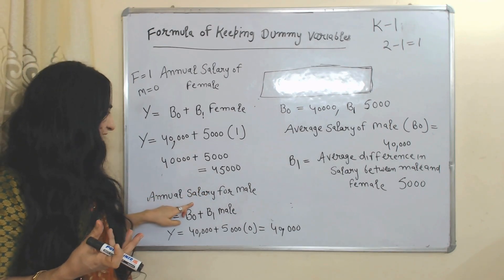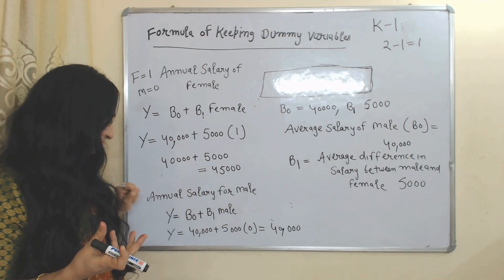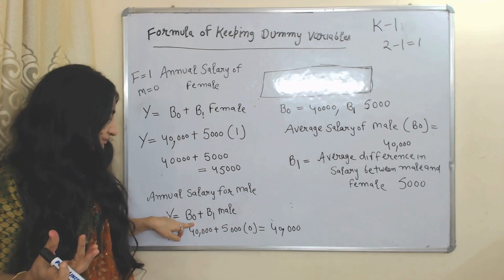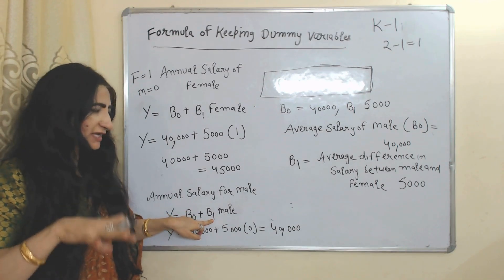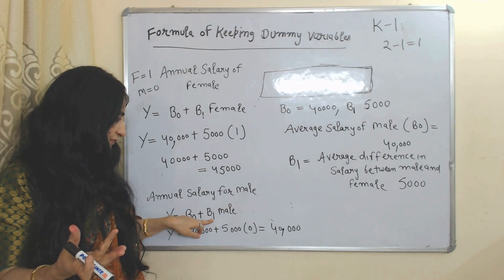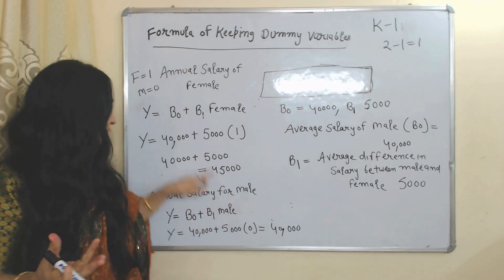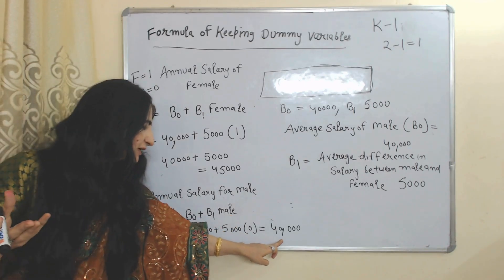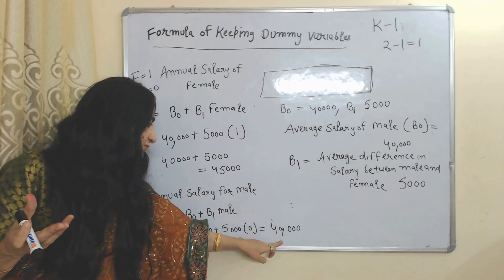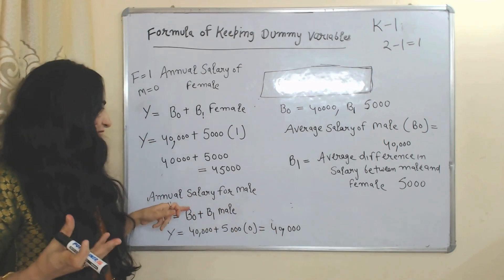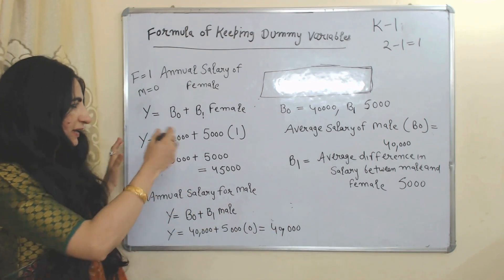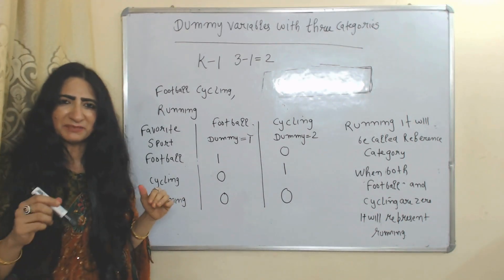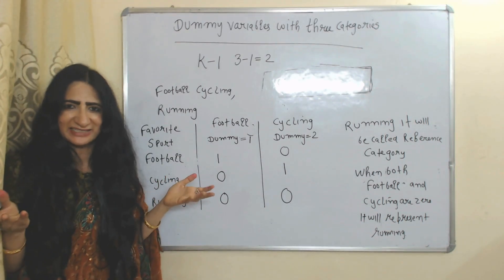Now we calculate the annual salary for male. Beta-naught is the average salary of female and beta-one is the difference between average salary of male and female. For male we put zero, so the remaining equation equals 40,000. This is the annual salary for male. By this way we keep dummy variables. Now we will see dummy variables in the case of three categories.